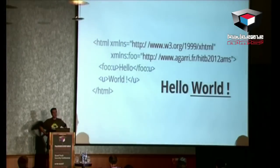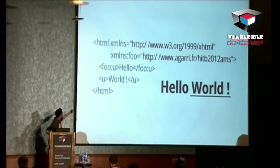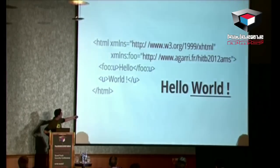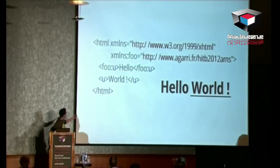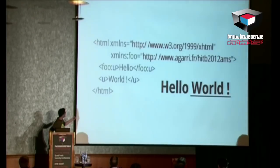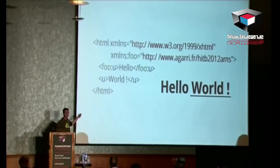Extensibility is very important. In order to understand extensibility, we need to understand namespaces. Namespaces are used to define the precise meaning of a tag, and they are usually defined by a URL. So here's a very simple example — we have an HTML document with two namespaces. The default one is the XHTML namespace. The second is a private namespace with my own URL. When a browser tries to interpret this document, only known tags will be rendered, because the browser has no idea of the meaning of a custom tag in that namespace.